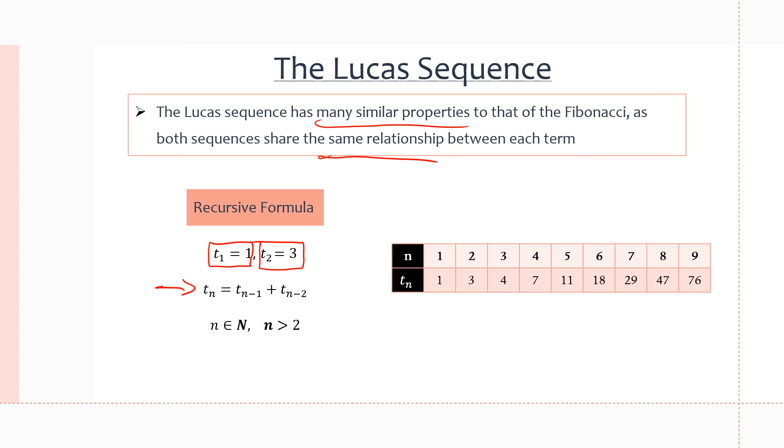So if we take a look at the table here on the right, we can see a few terms of the Lucas sequence. In comparison to the Fibonacci sequence, we start with 1 and 3. And we get the next term by adding the two previous terms just like before. So to get 4 we add 1 and 3. To get 7, 3 and 4. To get 11, 4 plus 7. To get 18, 7 plus 11, and so on until infinity once again.